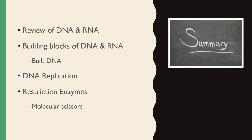To summarize part one of lecture three: we reviewed basic characteristics of DNA and RNA, discussed the building blocks including nitrogenous bases, pentose sugars, and phosphate groups. We assembled nucleosides (sugar + nitrogenous base), then nucleotides (nucleoside + phosphate group), then nucleotide polymers (chains of nucleotides), and finally DNA. We covered DNA replication and the enzymes involved, and we briefly touched on restriction enzymes — or as I like to call them, tiny molecular scissors.